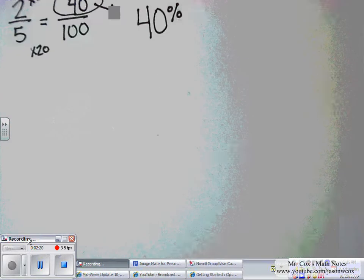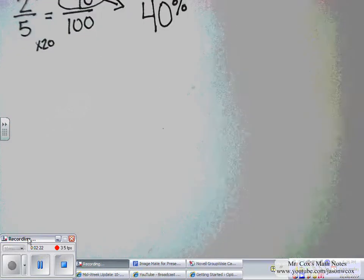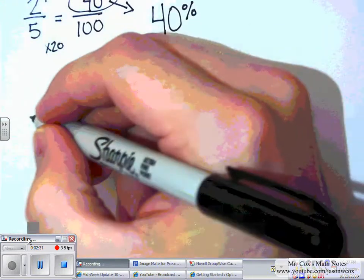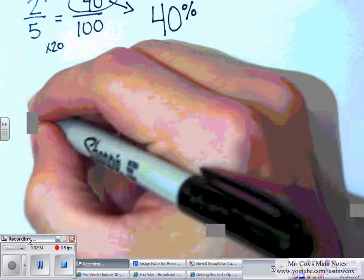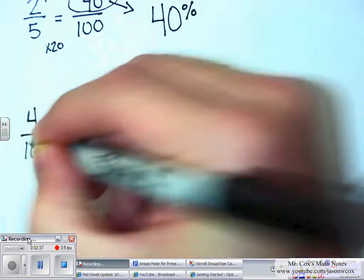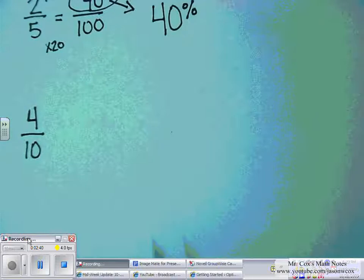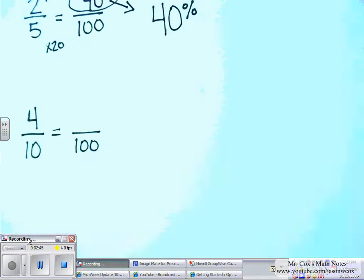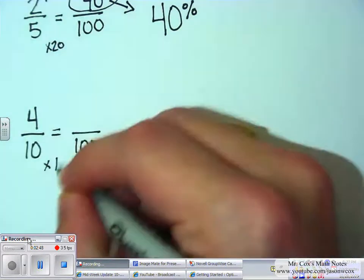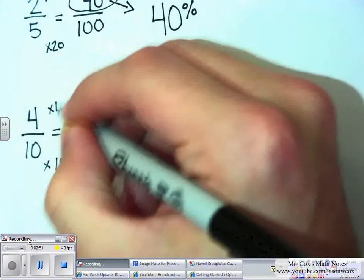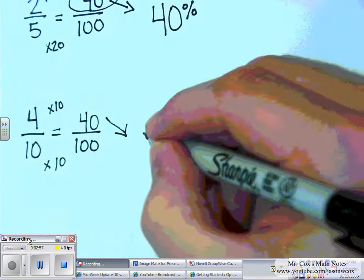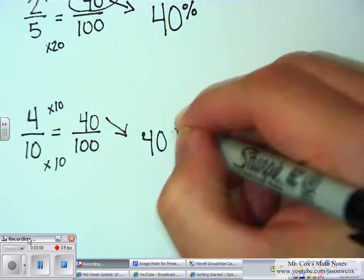Let's try one more — let's do 4 tenths. I want to make that equal to something over 100. 10 times 10 is 100, so 4 times 10, to make an equivalent fraction, would be 40 over 100. Extract that out, and again I have 40%.